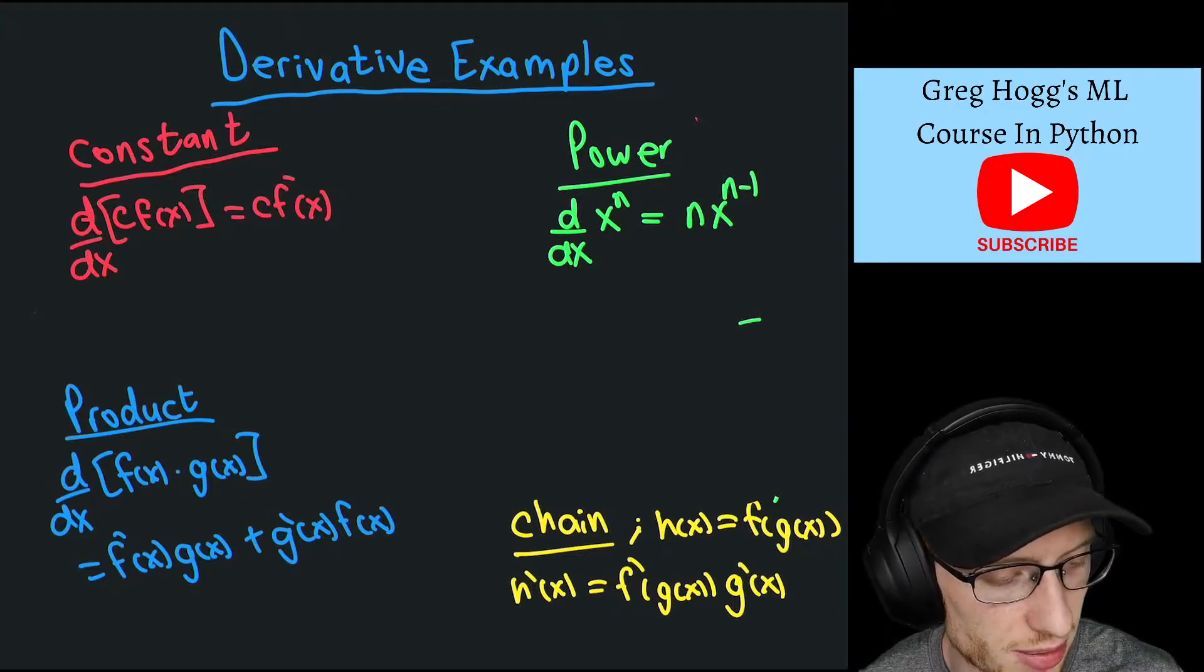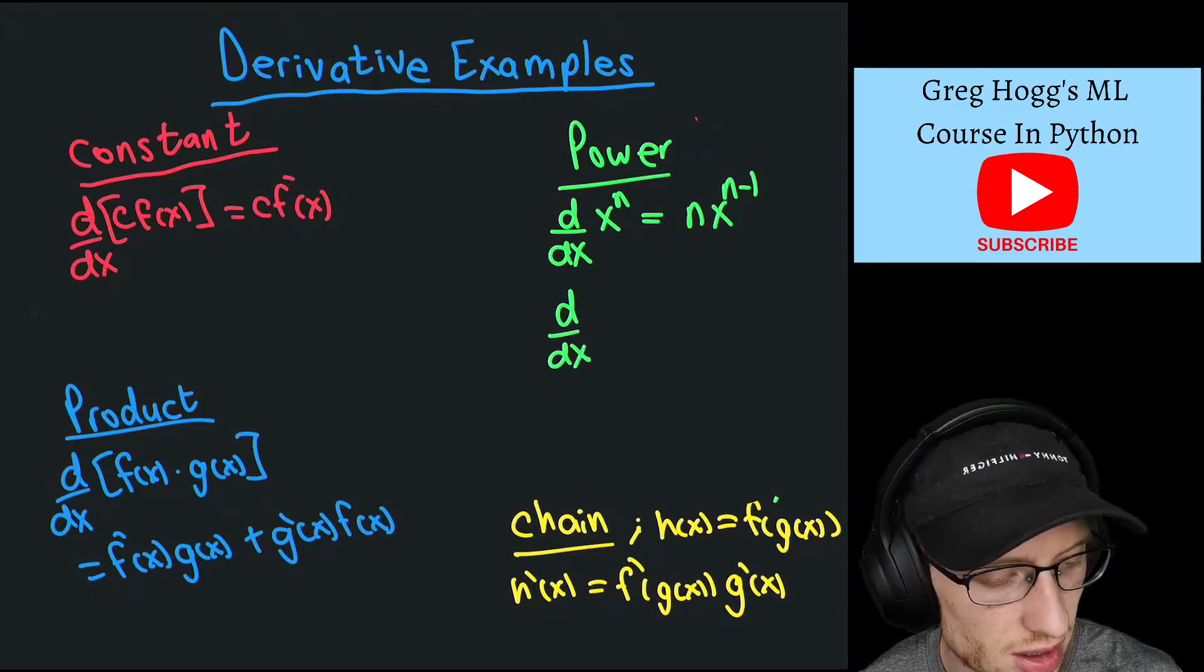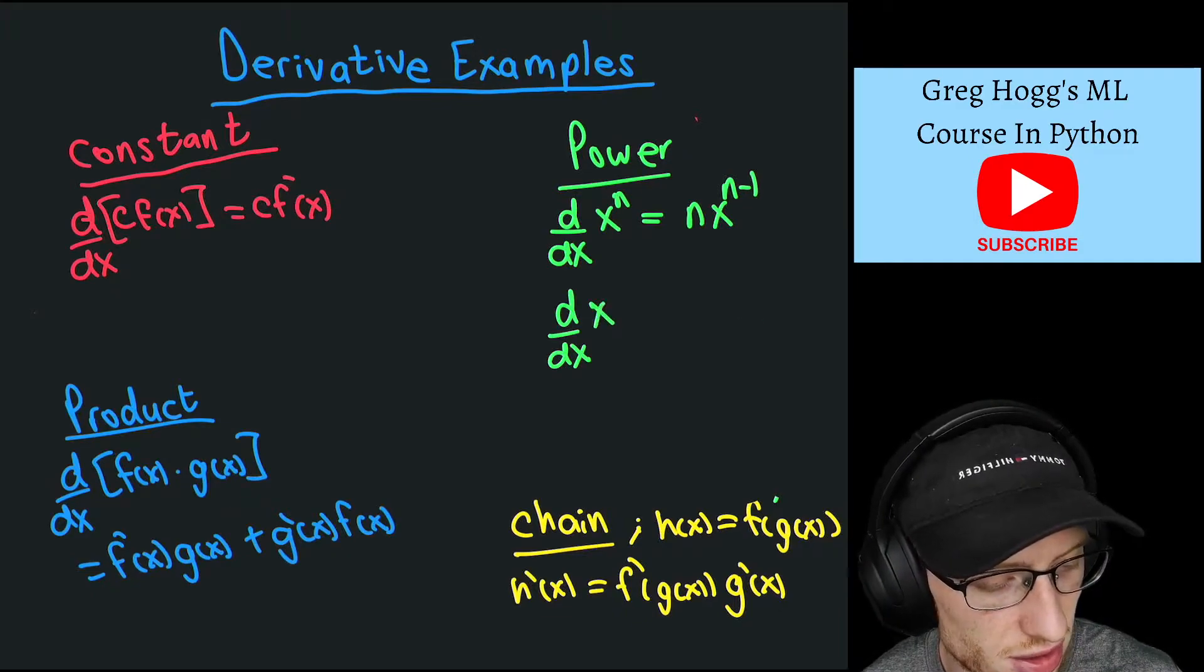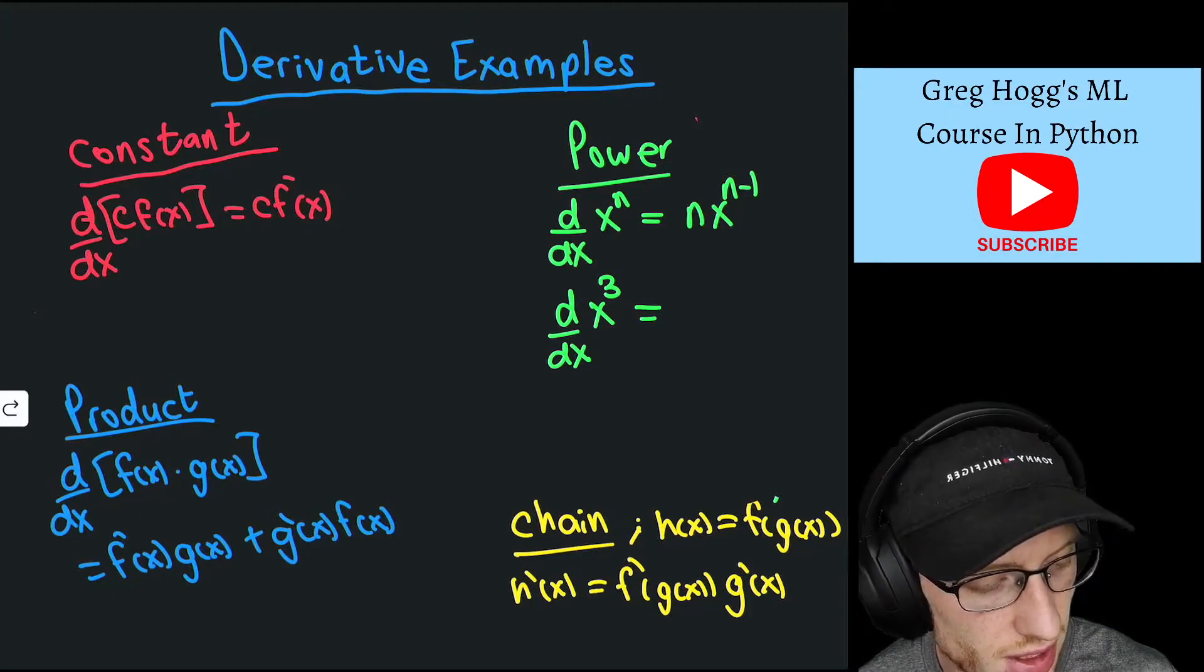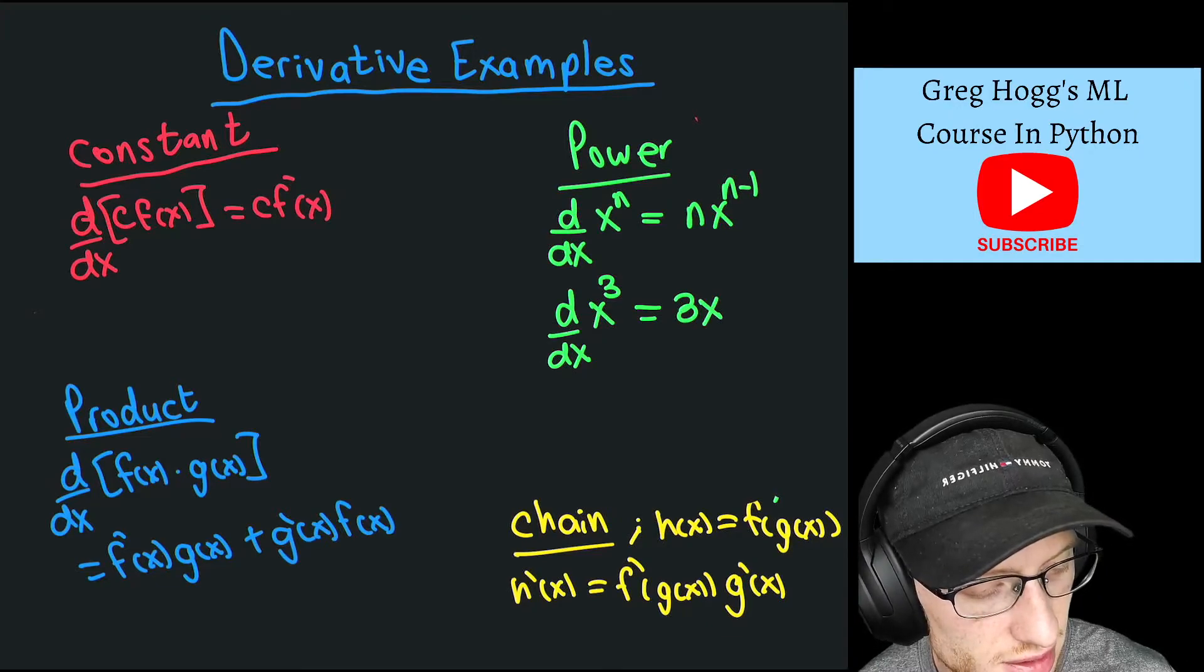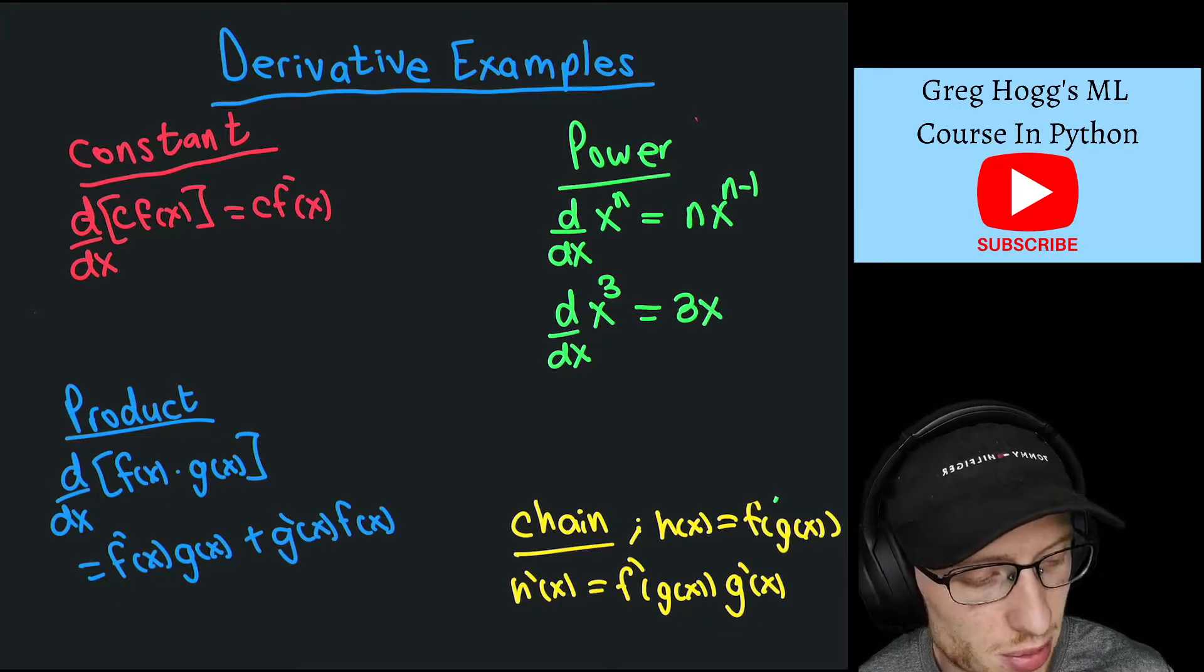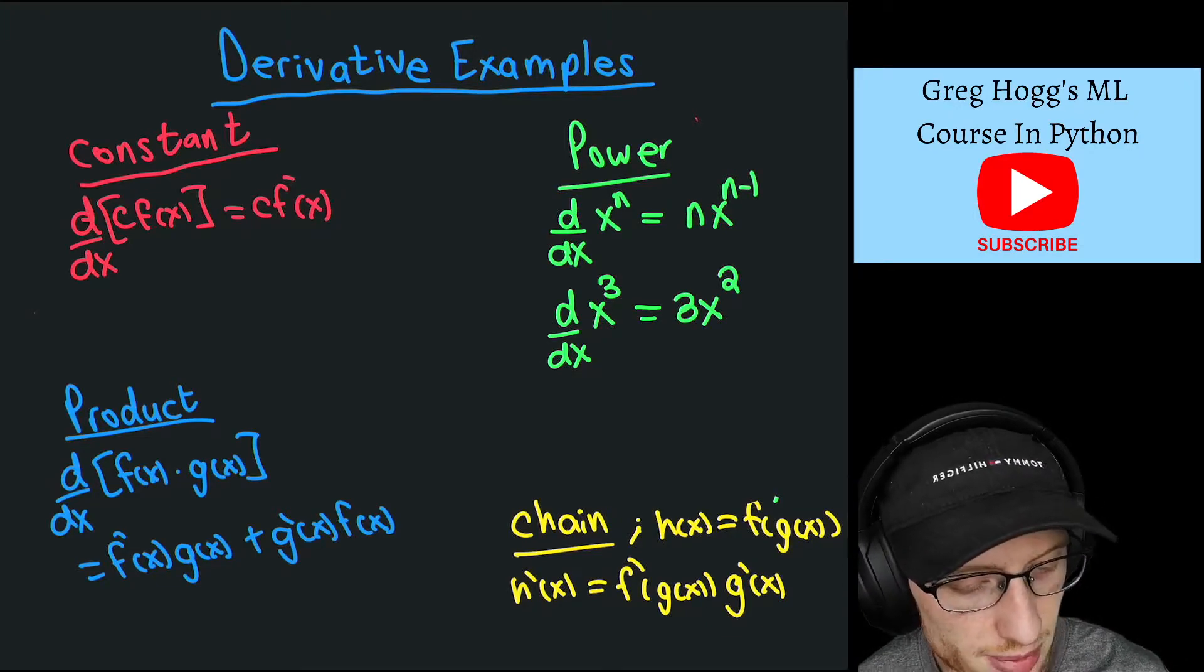Say that we had the derivative of just x to the 3. Well that, you're going to push that to the front and you're going to get 3x, except you drop 1 on the exponent of x and you get 3x squared.